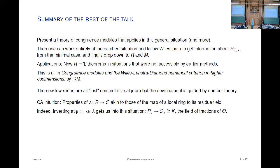Indeed, if you start with this map from R to O and localize at the kernel, you land in that situation. But in this process you're losing information about torsion when you localize—some of the trick was to get information without losing torsion information in this process.